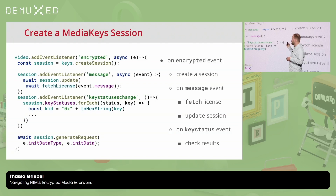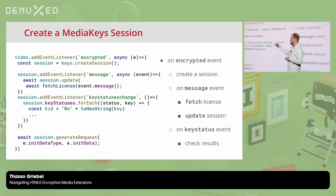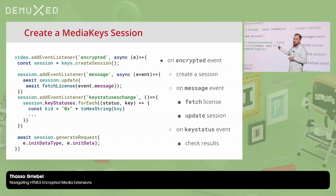In code, it looks like this: you listen to the encrypted event, then create a new session, attach a message listener, fetch your license, call session.update with the response, and you're done. A very important listener that often gets forgotten is keystatuschange. This informs you about the status of the keys in your CDM and can be tremendously helpful for understanding what's loaded and the state of those keys.